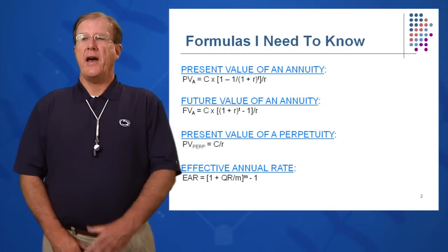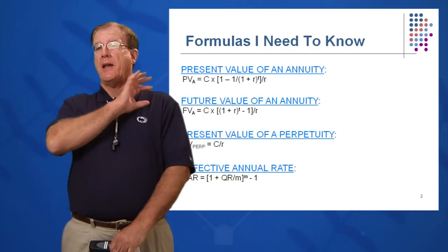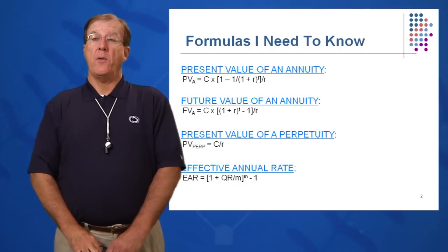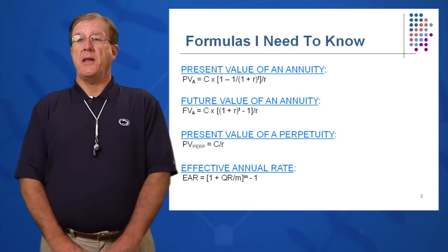When we're doing present value we're bringing our cash flows back to the left and when we're compounding and calculating future value we're looking out to the right. So second equation will be the future value of an annuity. We're going to look at that in some detail.